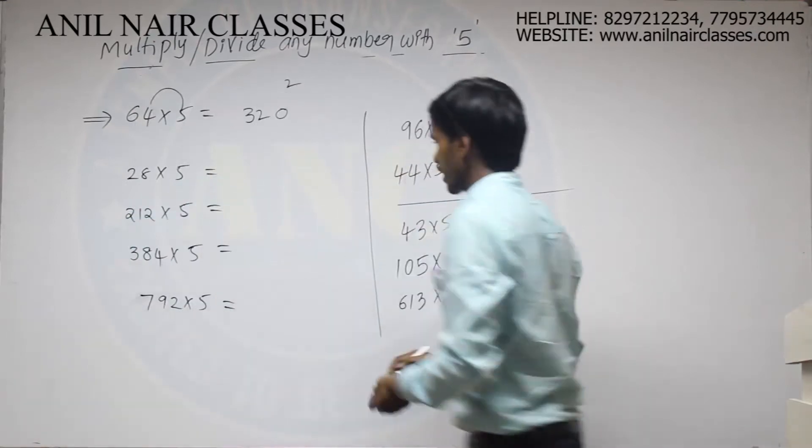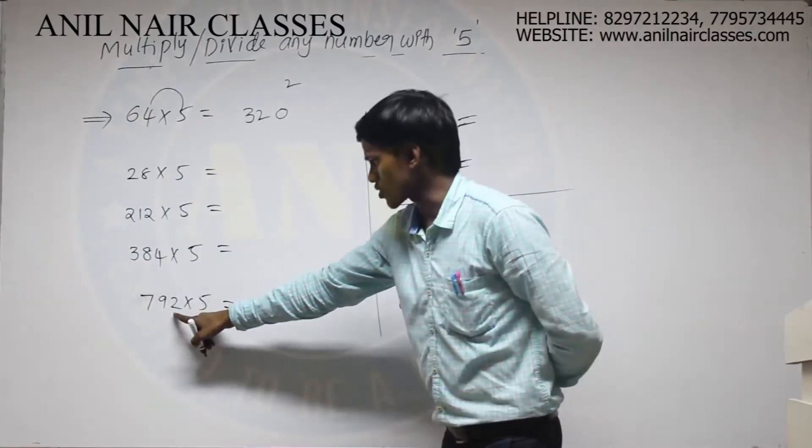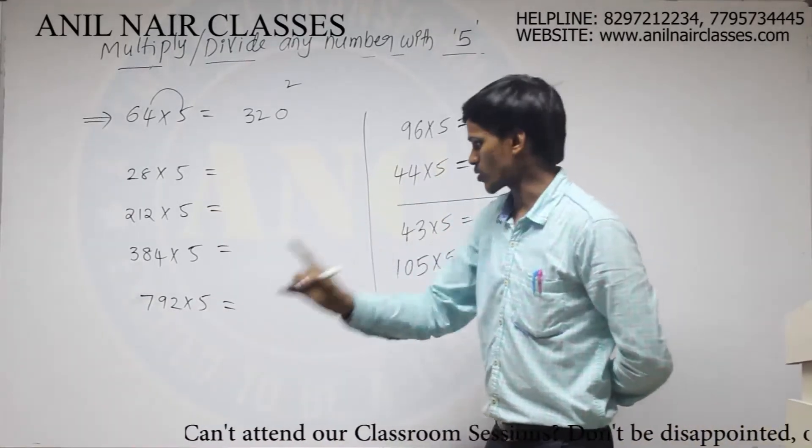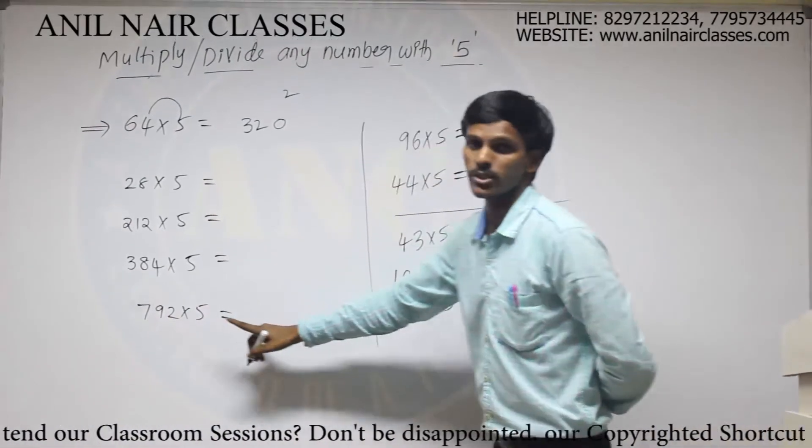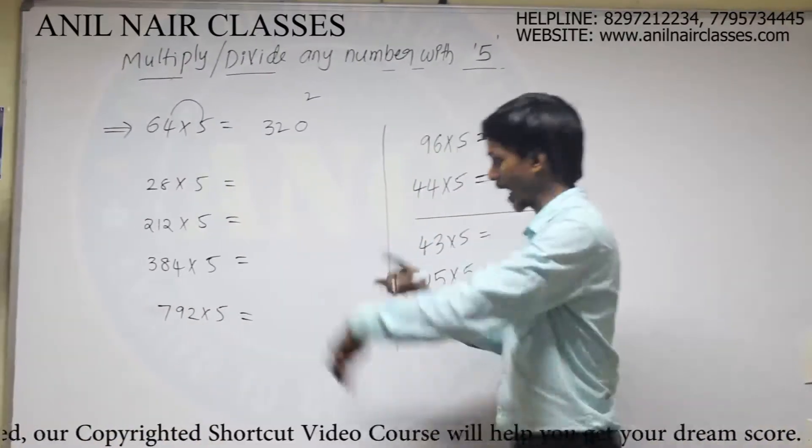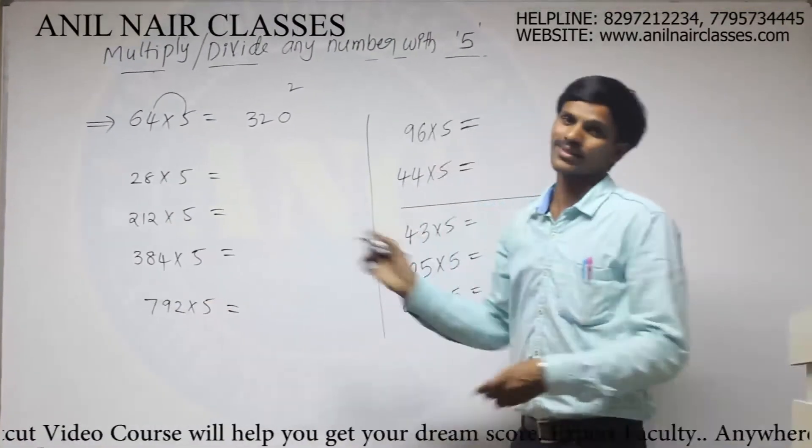But for suppose if the given question is like this, 792 into 5, 5 twos are, some carry will be there, 5 nines are, carry and then 5 sevens are, some other carry.